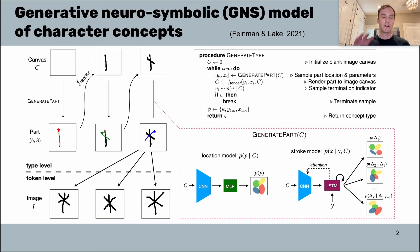Specifically, there are two sub-modules to the part generator. The first is the location model—a convolutional neural network that reads the image canvas and predicts a two-dimensional coordinate for where the stroke is going to start.